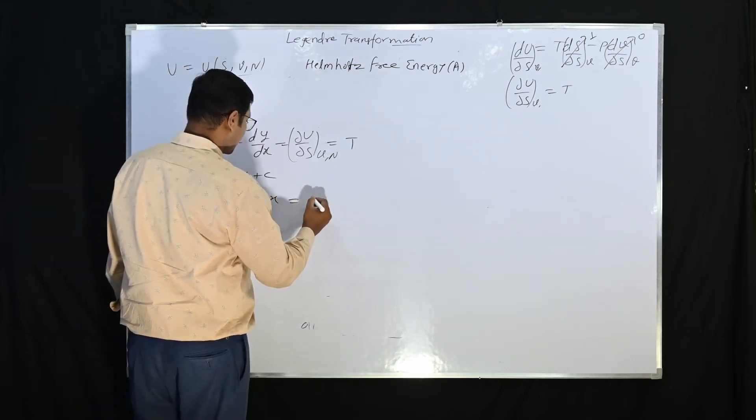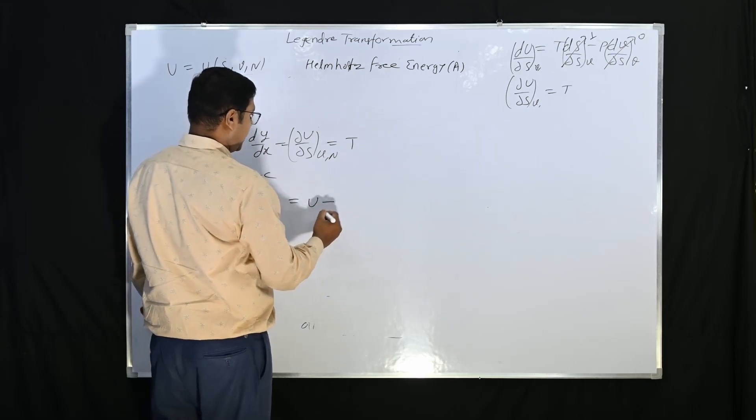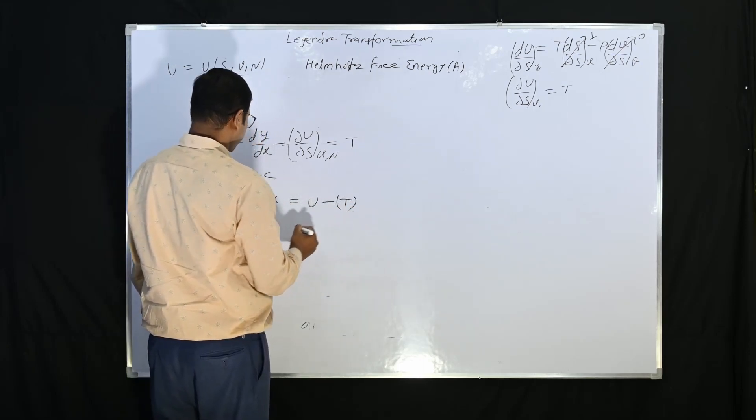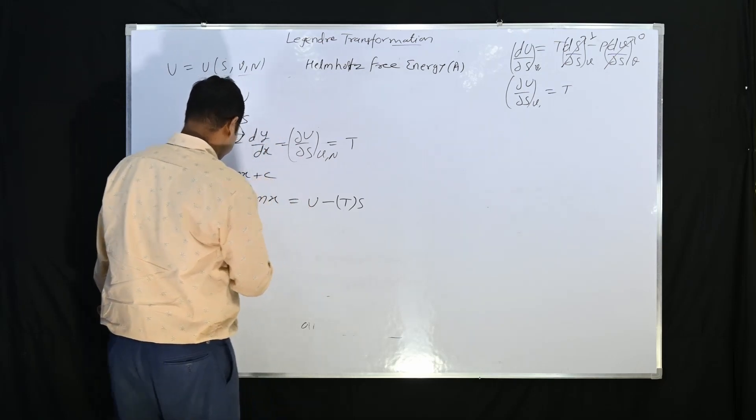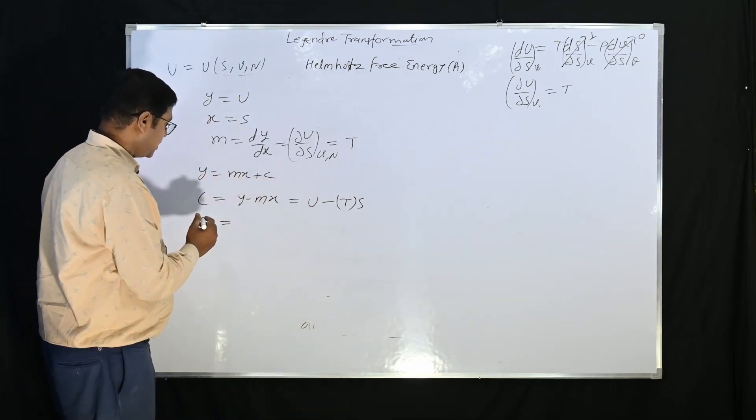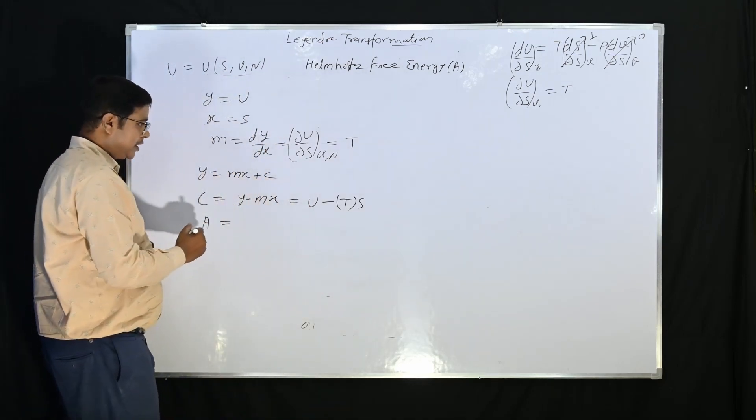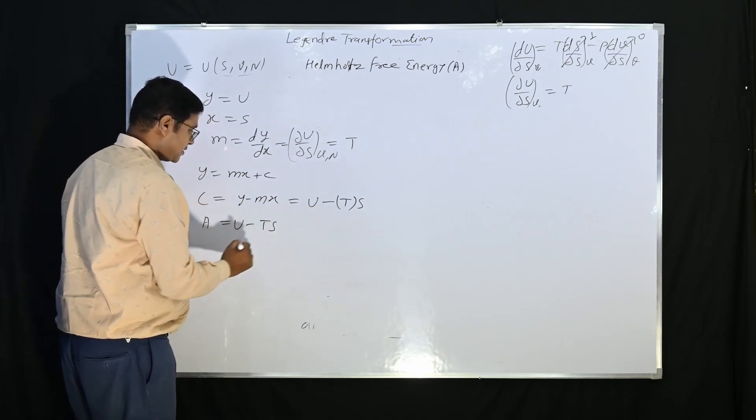Y is U, M is T, and X is S. So this comes, and C is A. So A is equal to U minus TS.